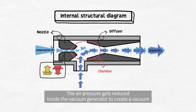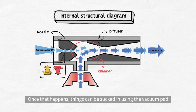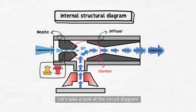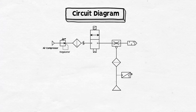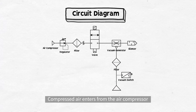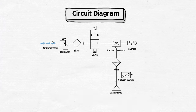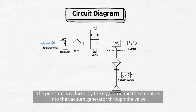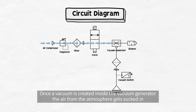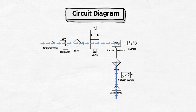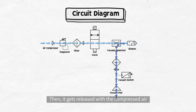The air pressure gets reduced inside the vacuum generator to create a vacuum. Once that happens, things can be sucked in using the vacuum pad. Let's take a look at the circuit diagram. Compressed air enters from the air compressor. The pressure is reduced by the regulator and the air enters into the vacuum generator through the valve. Once a vacuum is created inside the vacuum generator, the air from the atmosphere gets sucked in. Then, it gets released with the compressed air.